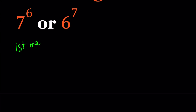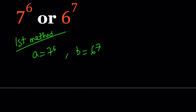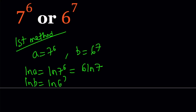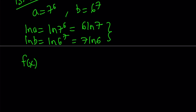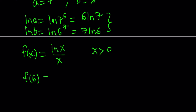Let's start with the first method. Suppose a equals 7 to the 6th and b equals 6 to the 7th. I would like to take the natural log of both values to get rid of the exponents. So ln a equals ln 7 to the 6th, which can be written as 6 ln 7, and ln b equals ln 6 to the 7th, which can be written as 7 ln 6. Instead of comparing a and b, I'm going to be comparing ln a and ln b. To do so, I'm going to consider the function f of x equals ln x over x, which is defined for positive x values. We're going to look at two values: f of 6 equals ln 6 over 6, and f of 7 equals ln 7 over 7.